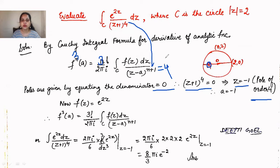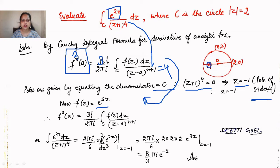Using the formula with f(z) = e^(2z) and a = −1, the integral equals (2πi/3!) · f'''(−1). Differentiating e^(2z) three times gives 2³·e^(2z) = 8·e^(2z). Substituting z = −1: f'''(−1) = 8·e^(−2). Therefore ∮_C e^(2z)/(z + 1)⁴ dz = (2πi/6) · 8·e^(−2) = 8πi·e^(−2)/3.